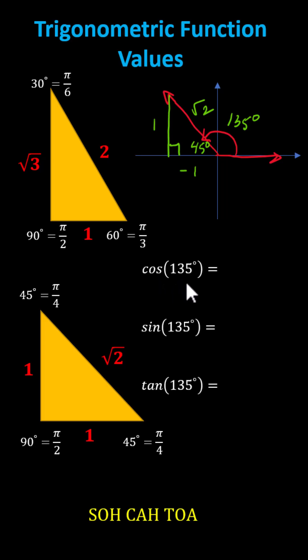Cosine 135 degrees equals the ratio of the adjacent side to the hypotenuse. Starting at the reference angle of 45 degrees, the ratio of the adjacent side to the hypotenuse is negative one divided by square root two.